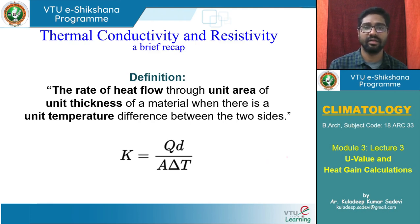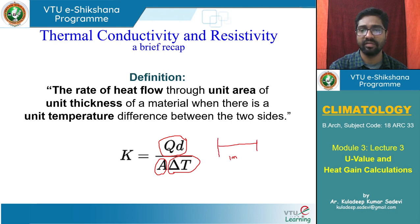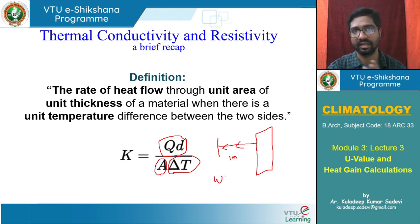We know conductivity as the rate of heat flow through unit area of unit thickness. The amount of heat that flows through a material — for 1 meter depth, 1 square meter area — for 1 degree change in temperature is conductivity. The units for conductivity are watts per meter degree centigrade, where watts is joules per second, representing the rate of heat flow.